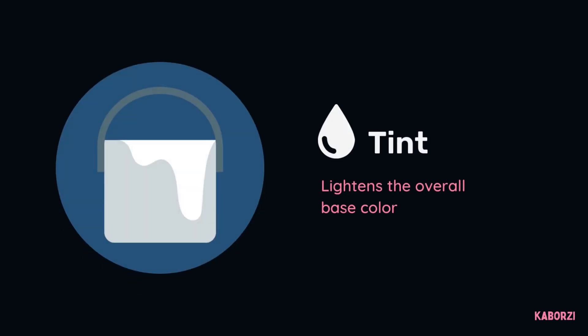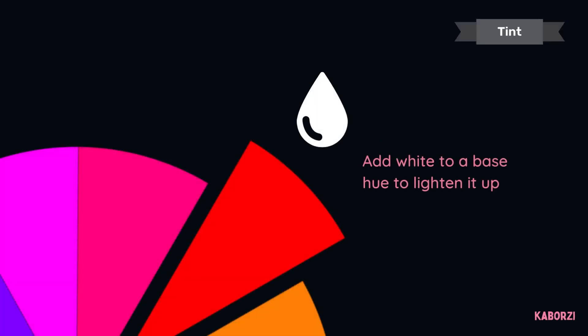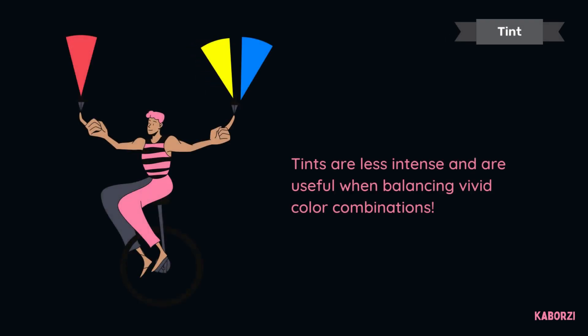Tint: the purpose of a tint is to lighten the overall base color. It's created by adding white to a base hue, lightening it up. This can make a color less intense and is useful when balancing more vivid color combinations.